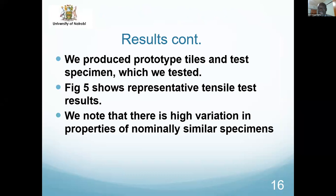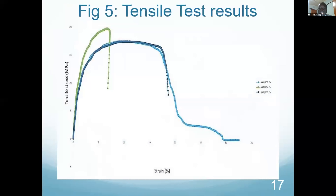We have produced prototype tiles and test specimens. The next figure shows representative tensile test results. One key observation is the high variation in properties of nominally similar specimens — these are tensile strain curves from three specimens that are supposed to be nominally the same from the same mix. There is quite some variation in tensile strength at fracture and strain at fracture, meaning the material properties vary widely.